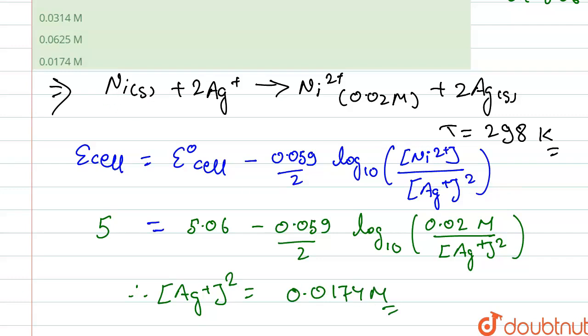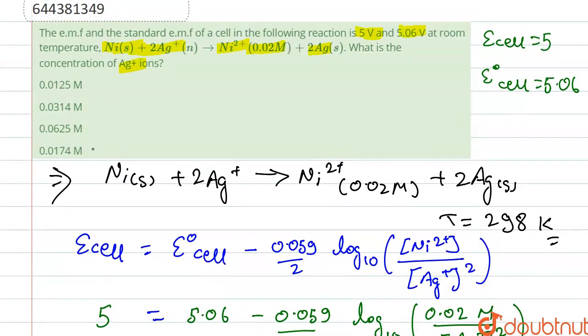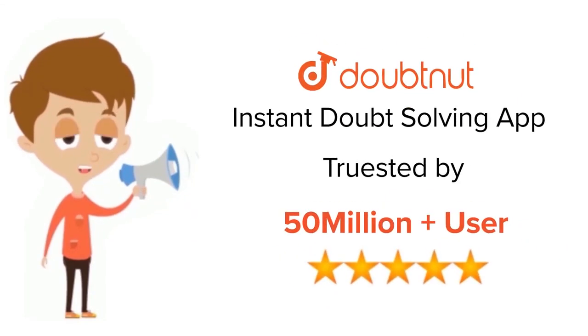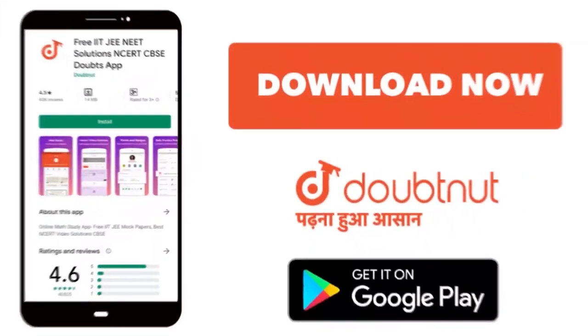This is matched with our option 4, so the correct option is option 4, the concentration of Ag+. Thank you. For class 6 to 12th, IIT-JEE and NEET level, trusted by more than 5 crore students, download Doubtnet app today.